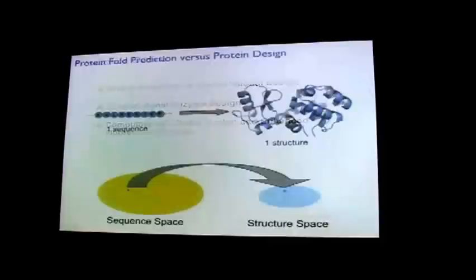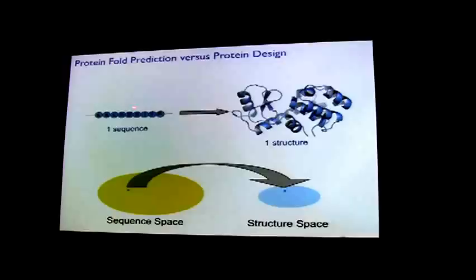Just to be clear on what we're doing and not doing: the difference between fold prediction and design. Fold prediction takes a sequence and asks what the structure might be — a mapping from a point in sequence space to a point in structure space. This is a very hard problem. Lots of progress has been made recently, but it's still difficult to go from sequence to structure.